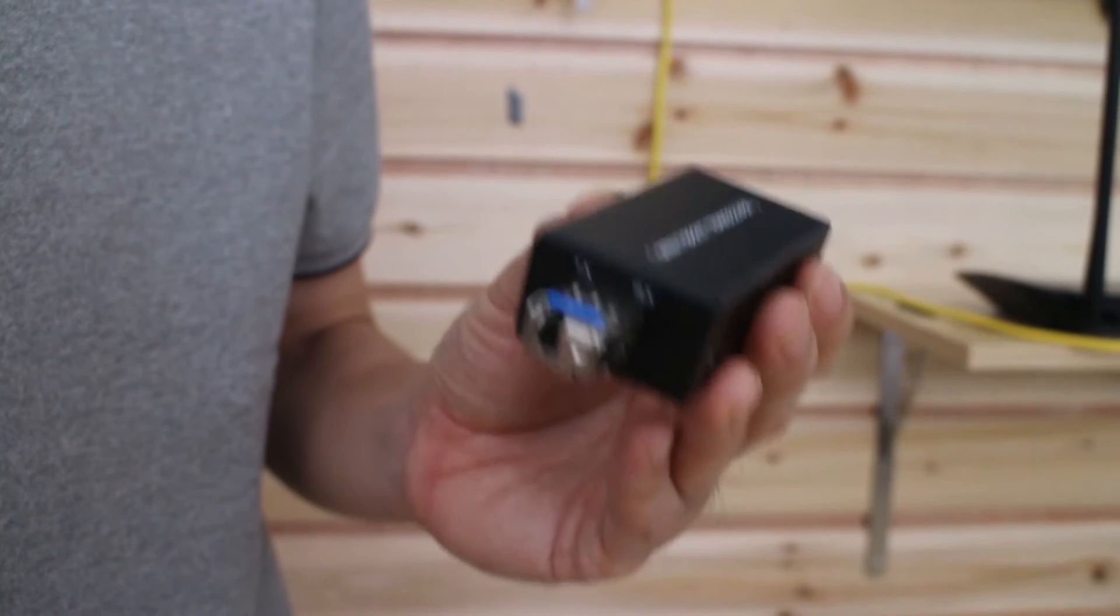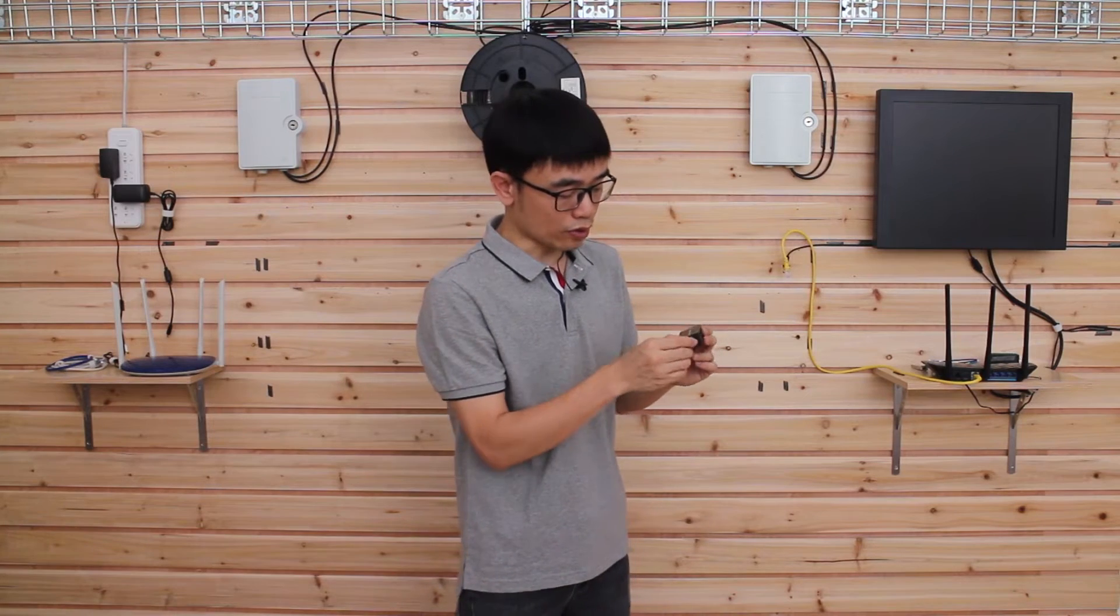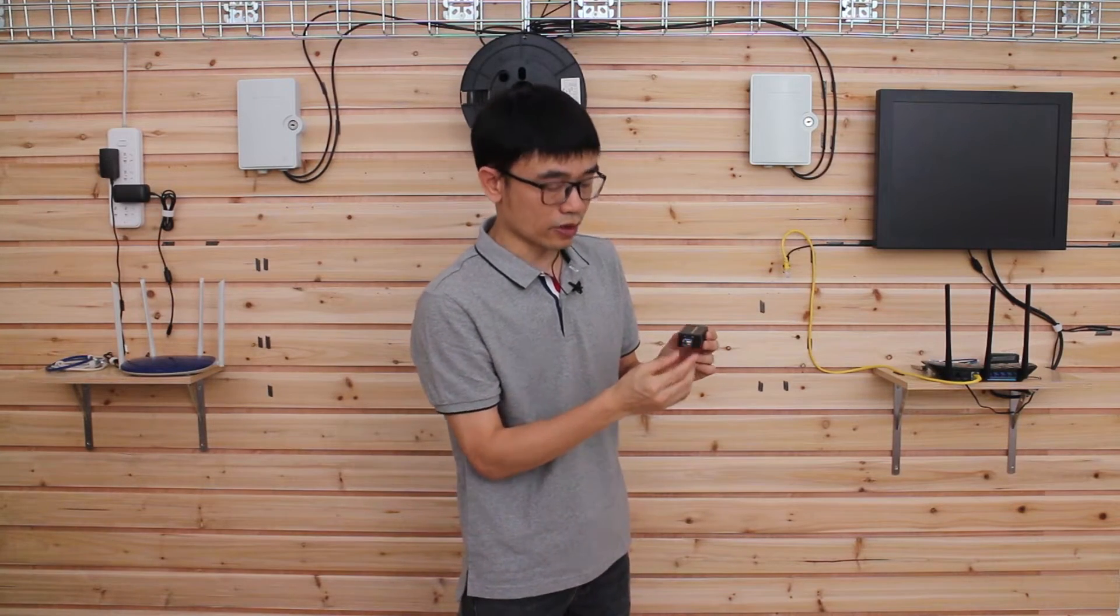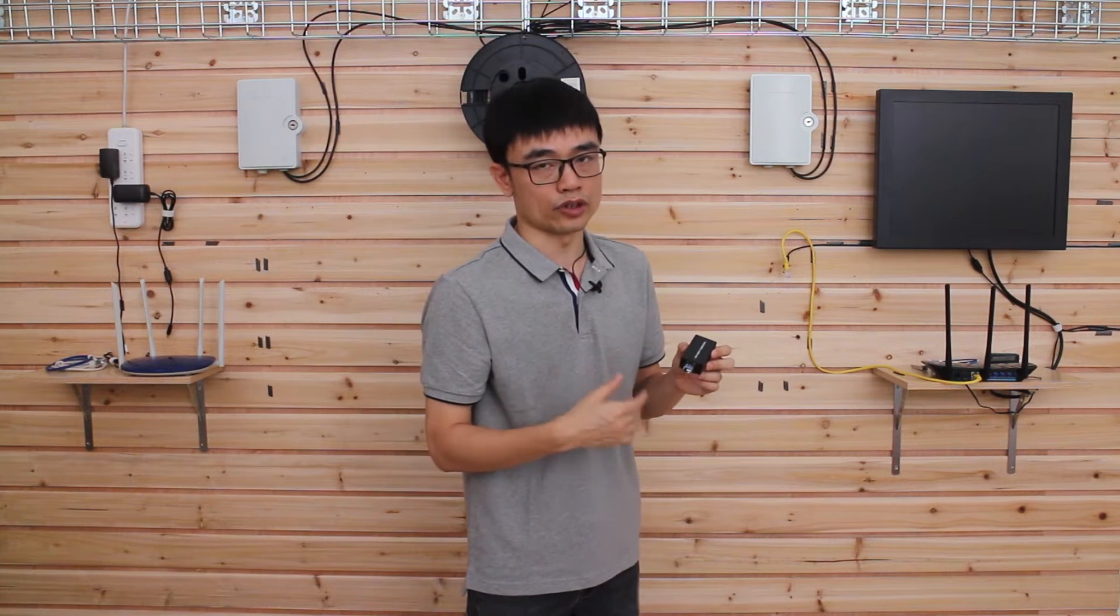This transceiver will determine what kind of fiber optic cable you can use, single mode or multi-mode, and what kind of connector you can use. This one accepts the LC connector. You may notice there is only one port. That's because this is the BI-DI SFP transceiver. It only needs single fiber optic cable to transmit and receive the data. It uses a different wavelength, so it saves one of the fiber optic joints.